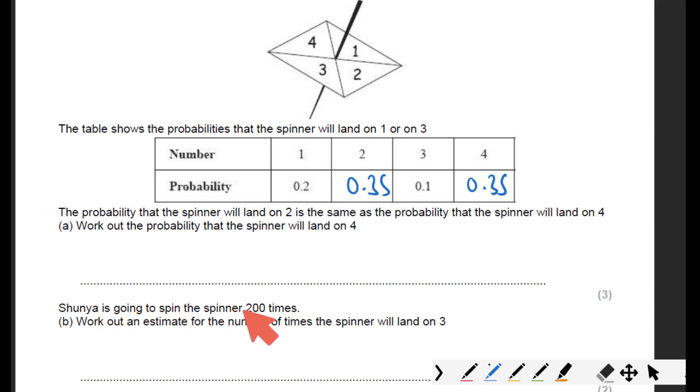Shunya is going to spin the spinner 200 times. Work out an estimate for the number of times the spinner will land on three. Just because it says estimate, it doesn't mean you can just guess any numbers. There's going to be some maths involved.